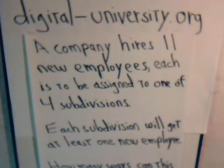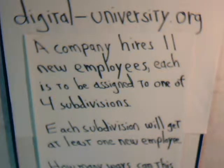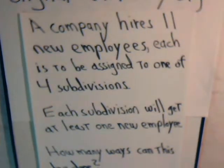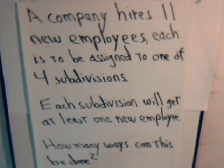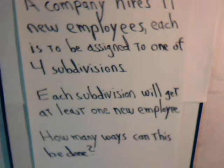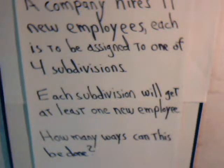Here we have a different kind of a problem. A company hires 11 new employees. Each one of them is to be assigned to one of four different subdivisions. And if each subdivision is to receive at least one new employee, how many different ways can this be done? So we have 11 new employees and four subdivisions to assign them to, ensuring that each subdivision receives at least one new employee.